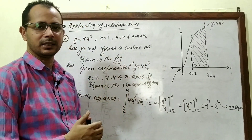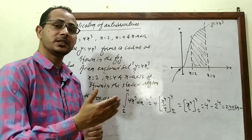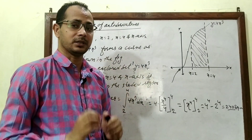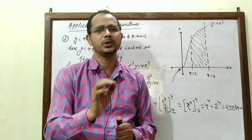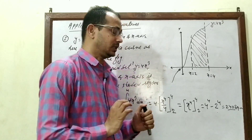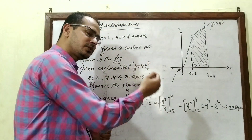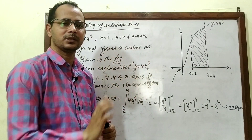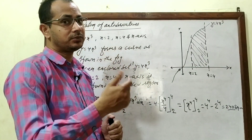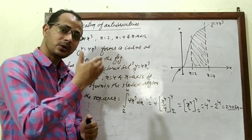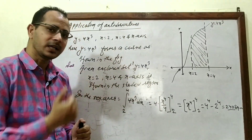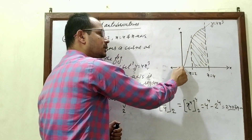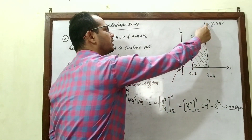For x = 0, y = 0, so it passes through the origin. Testing x = 1 gives y = 4, so point (1, 4). For x = −1, y = −4, so point (−1, −4) lies in the third quadrant. So the curve passes through the origin, goes through the first and third quadrants — a standard cubic shape.